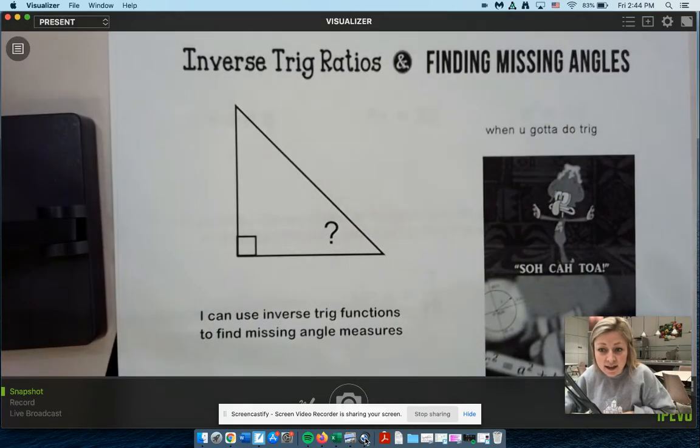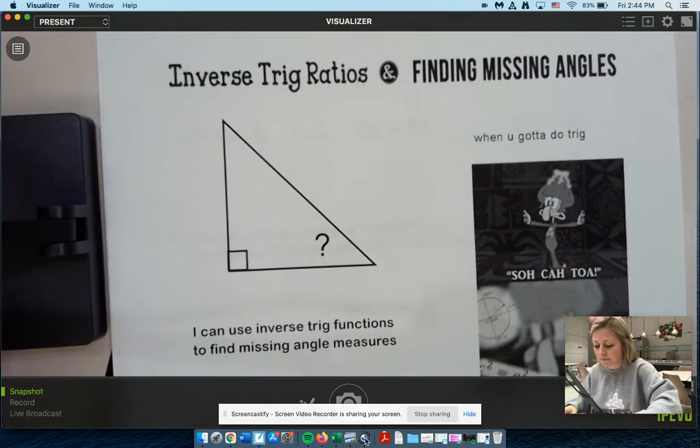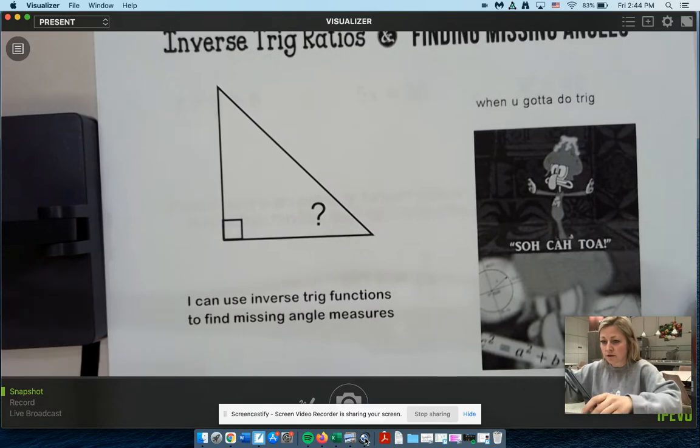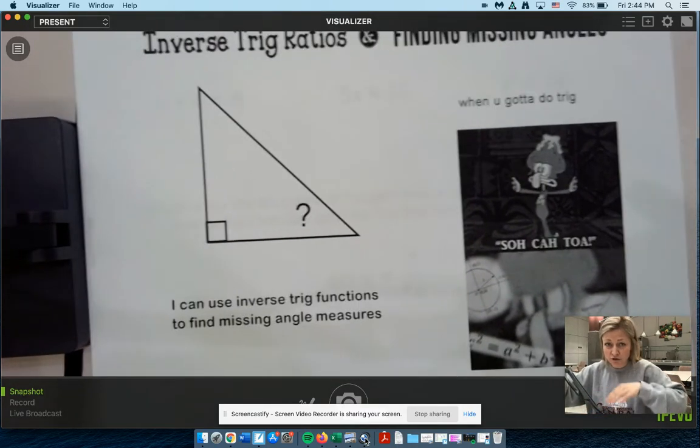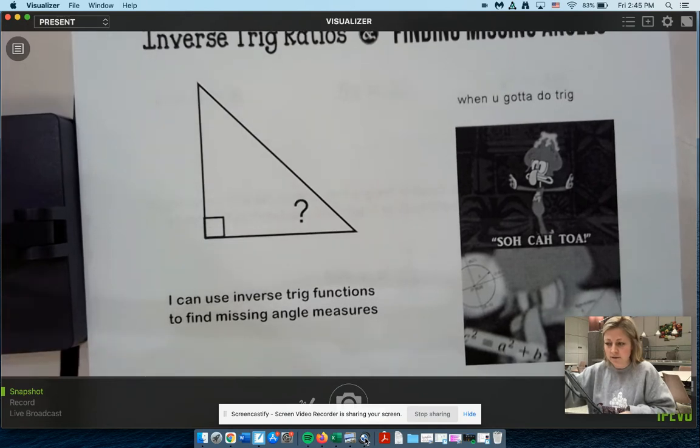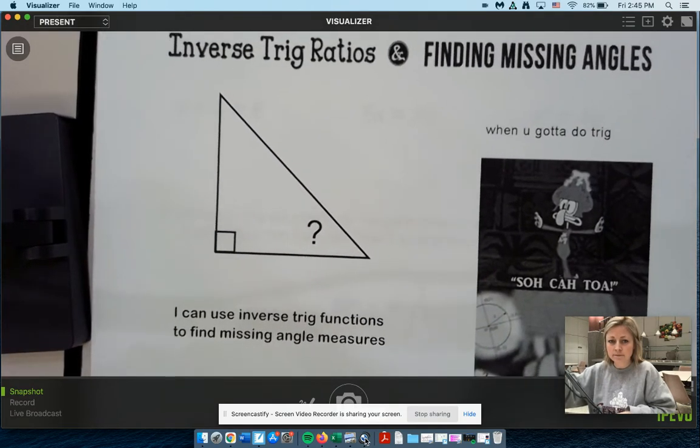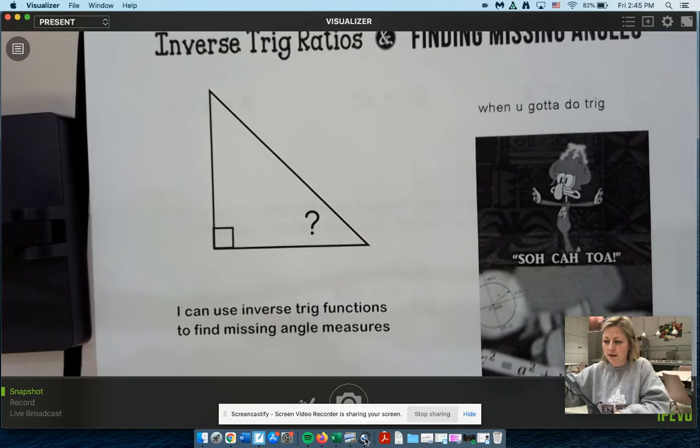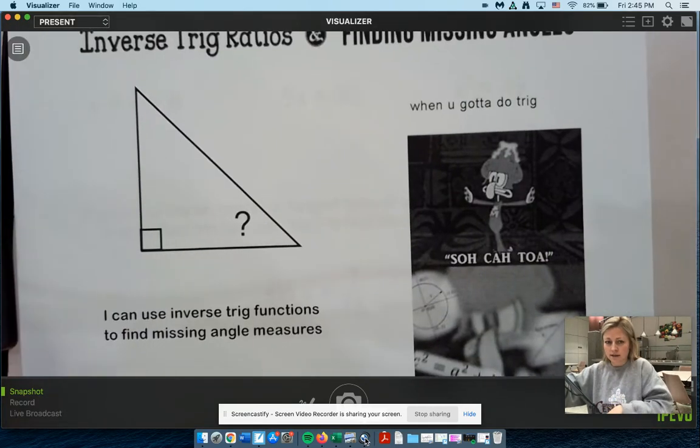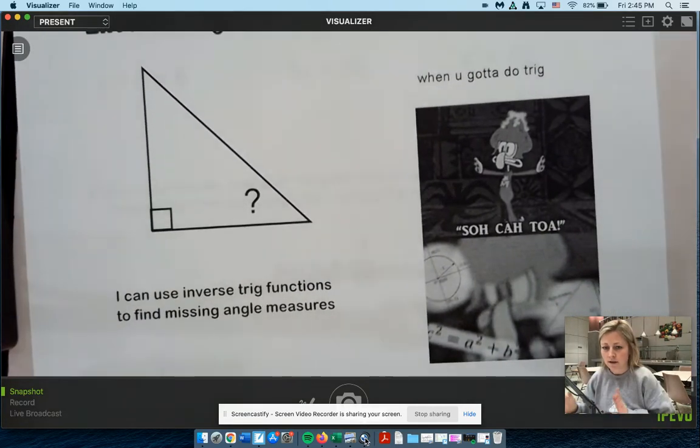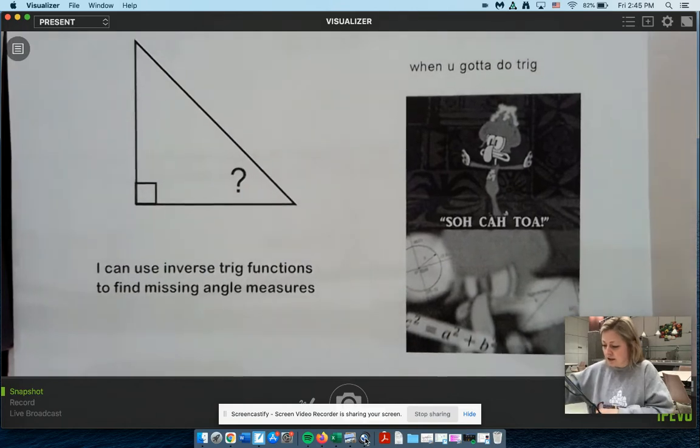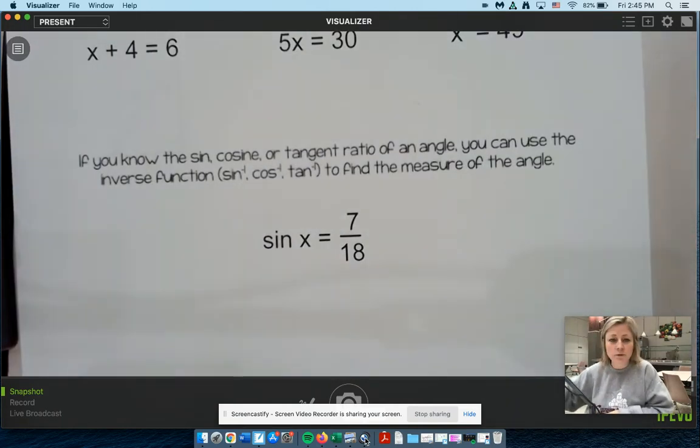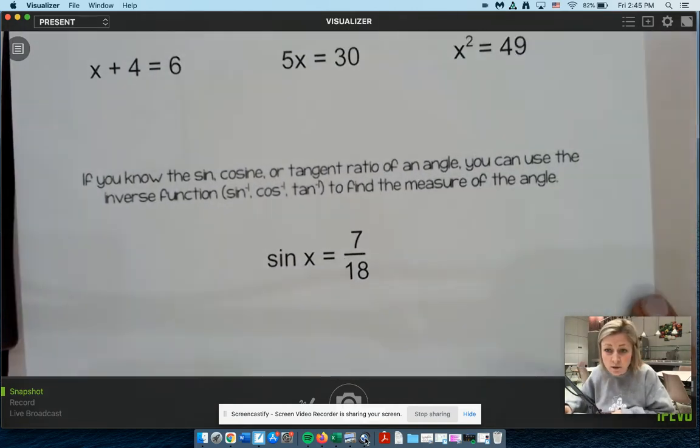So we're going to use trig today to find missing angles. And what you do in order to find that is the inverse trig ratio. So very similar to what we were doing before, but now we're using the inverse. We're going to use the inverse trig functions. So if you're kind of forgetting, which it's easy to do, let's remind ourselves what an inverse function is quick.